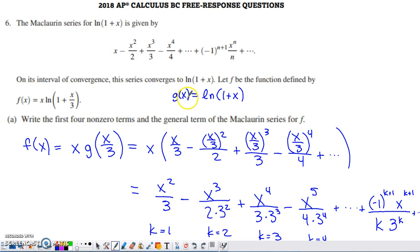If we have this series representation for g, I define g of x to be natural log of 1 plus x, just so I could use some nice simple notation. The difference between f of x and g of x is that we're putting x over 3 in place of this x, and then we're also multiplying by this additional x that's out in front of the logarithm.